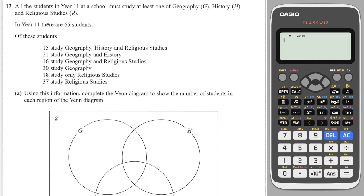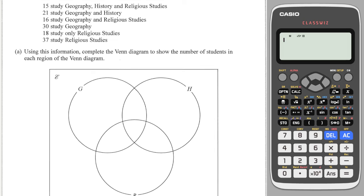Here is a classic question where you've got students that must study at least one subject: geography, history, and religious studies. We know there are 65 students in the year and you've got this information and you've got to put it into a Venn diagram. You always start at the center and you have that 15 study all three, so that goes in the center.